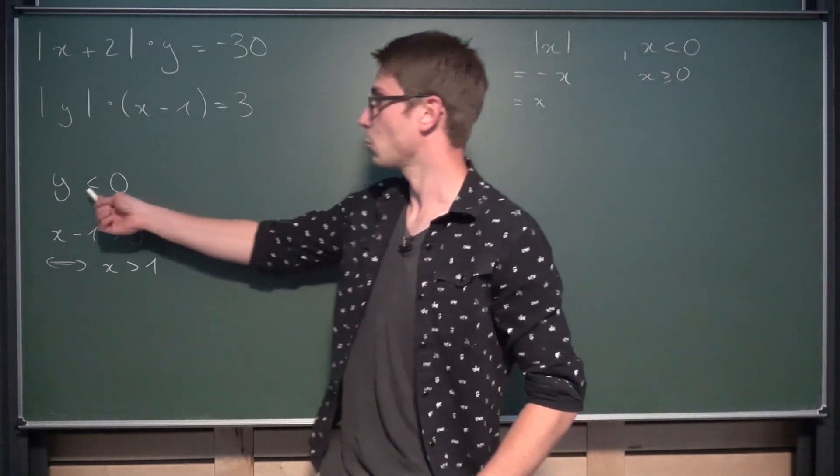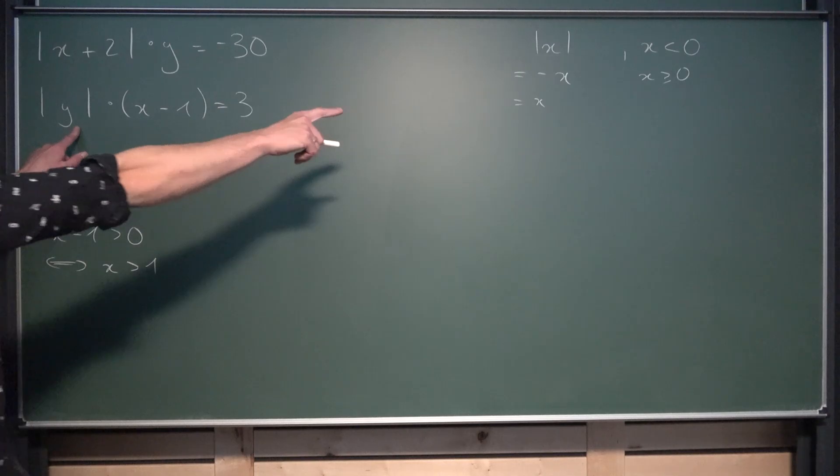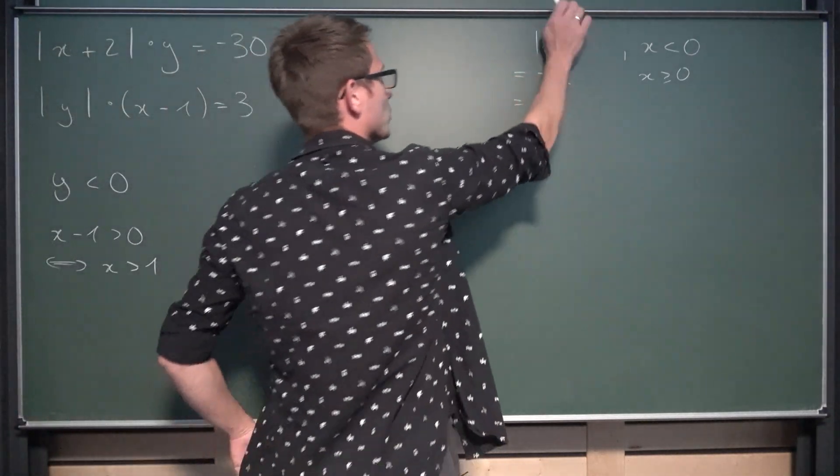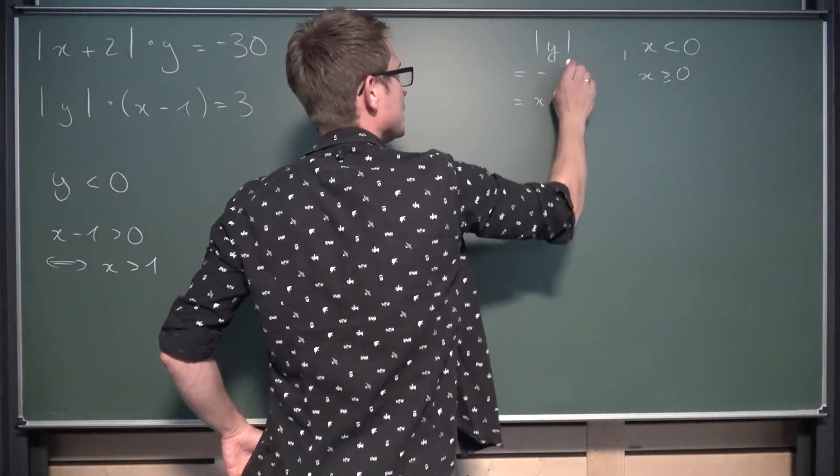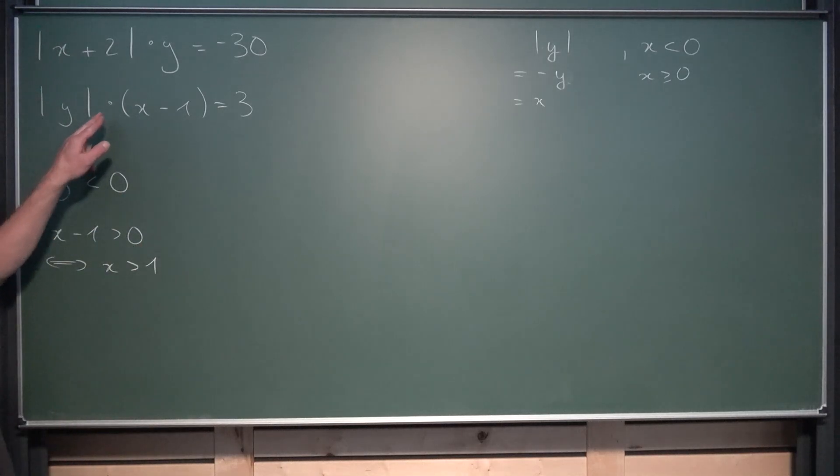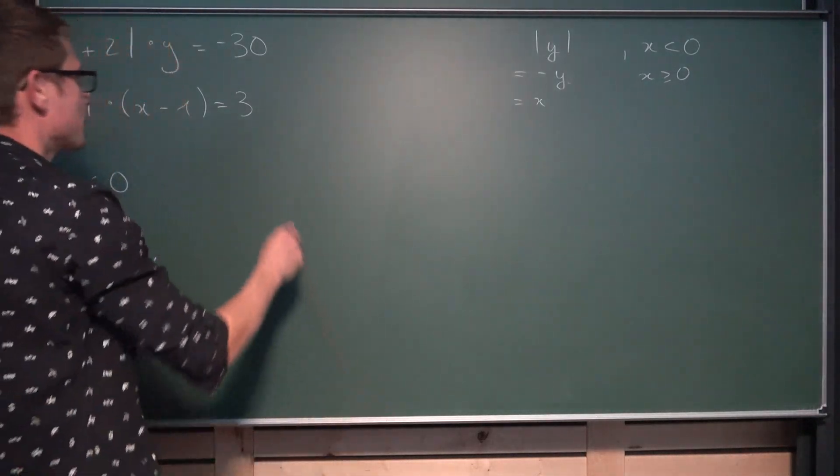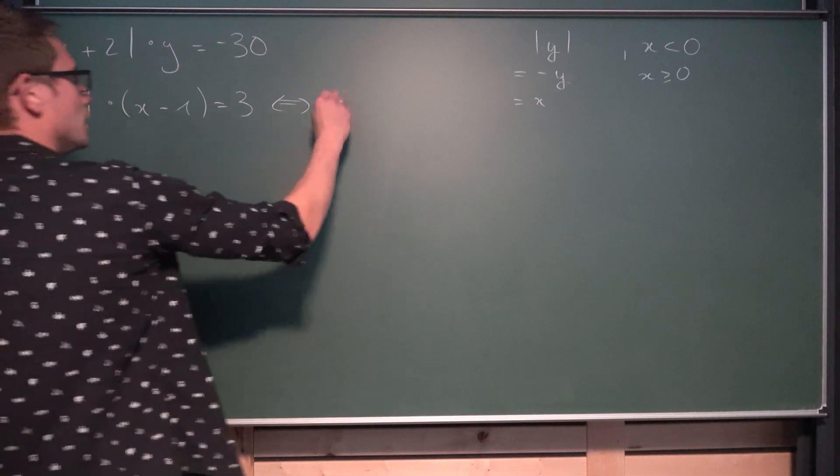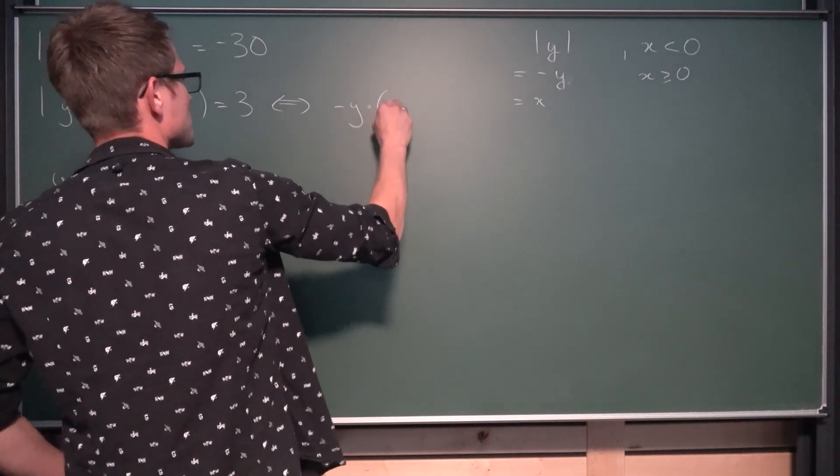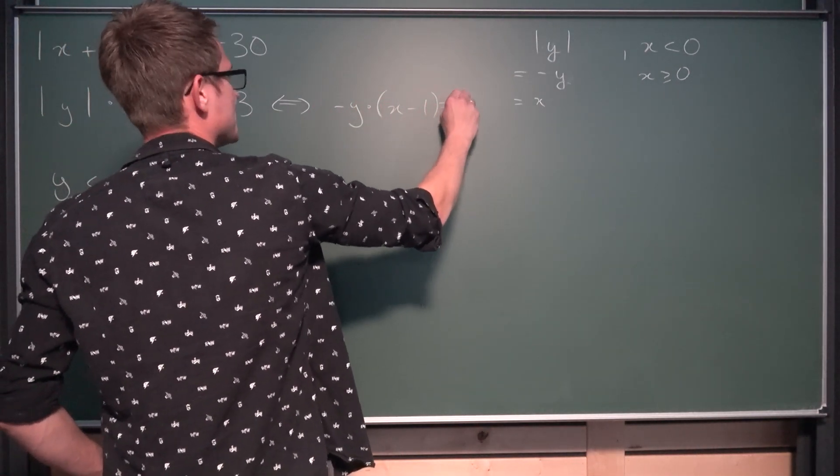What you are going to notice, y is less than 0. Take a look. The absolute value of y, when y is less than 0, is going to yield negative y. So our second equation is going to unfold very nicely into negative y times x minus 1 is equal to 3.